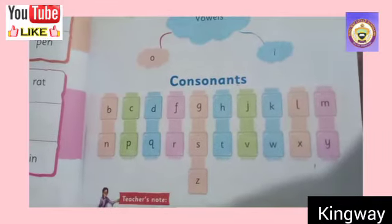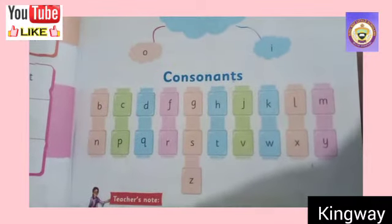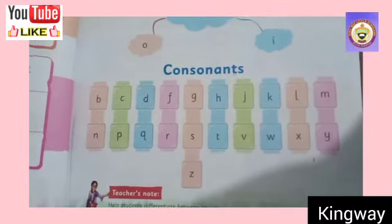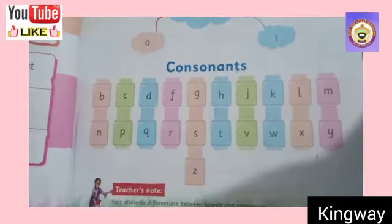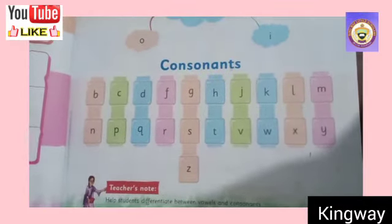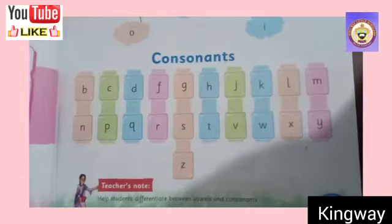The vowels are 5: A, E, I, O, U. If we remove these 5 vowels, the other letters are consonants. Okay?